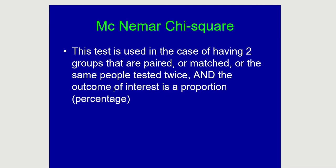Welcome back. We started talking about the chi-square, and in the previous video we discussed the methodology and techniques of running the Pearson chi-square, where you had multiple groups but the group members were independent and the outcome was categorical. Therefore your null hypothesis was testing if proportion in group one equals proportion in group two, or group three, etc.